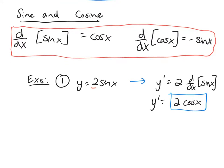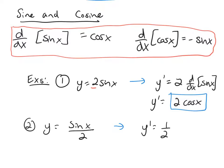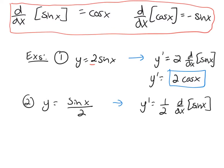Next example: y equals sine x over 2. This 2 in the denominator is just a coefficient of one half. So when finding the derivative, it's one half times the derivative of sine, which is cosine. So the derivative is just one half cosine x.